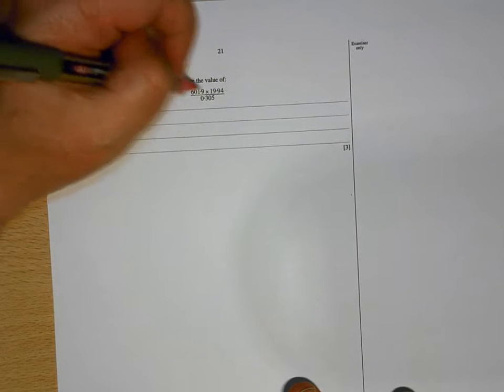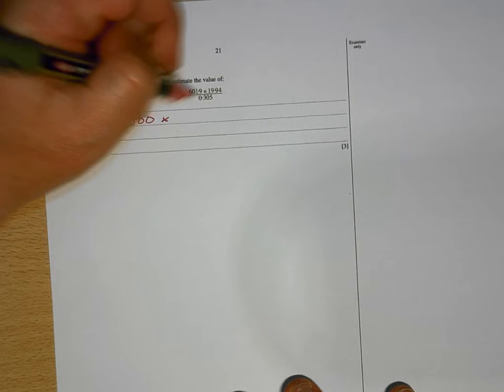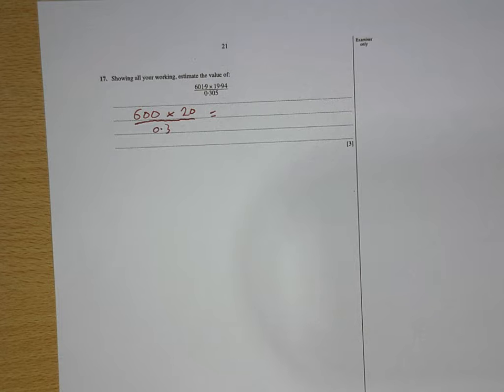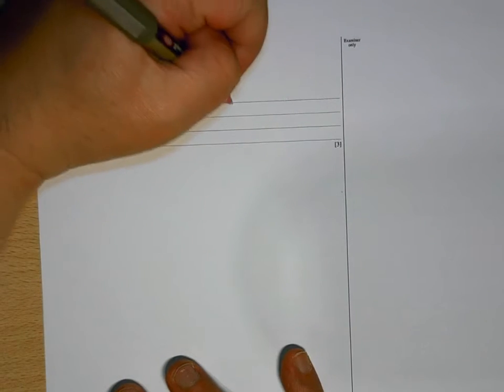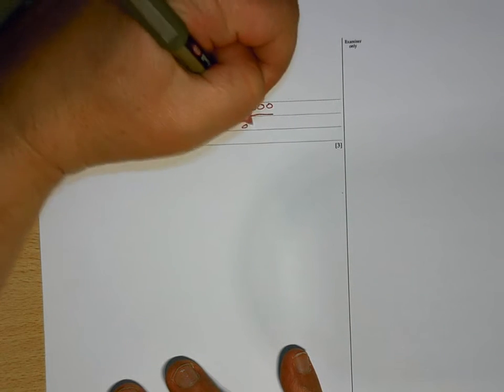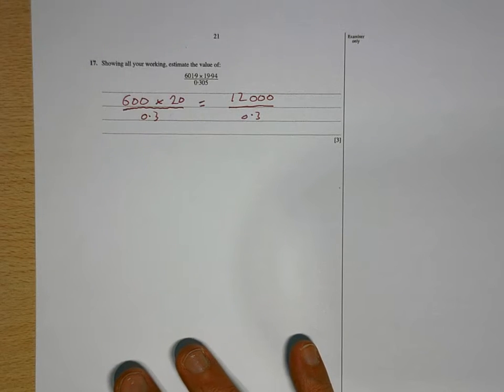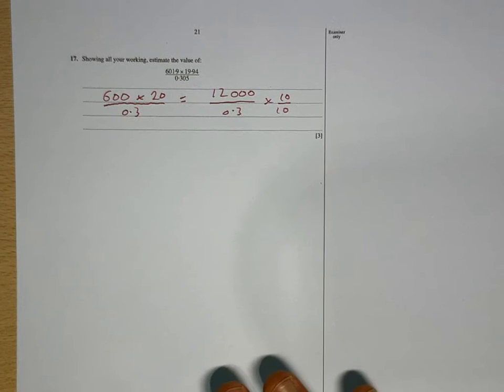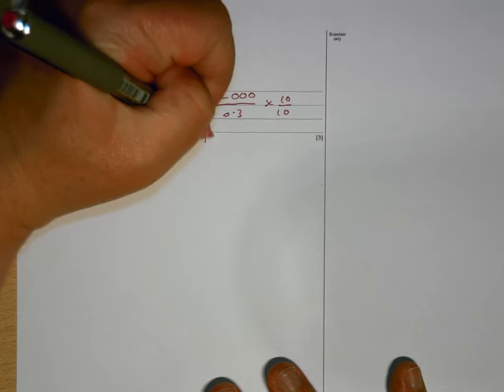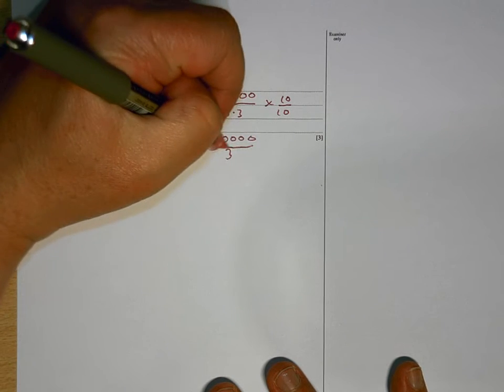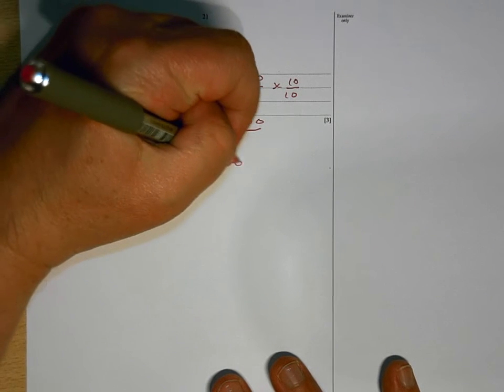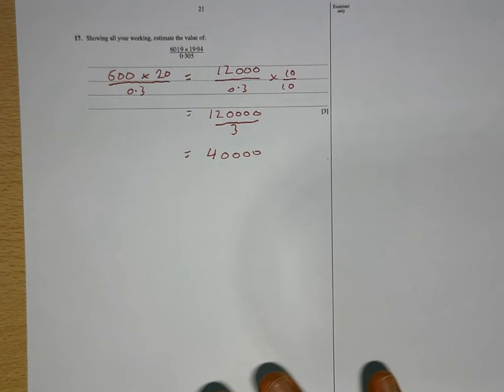And then the final question is an estimate. So, you round to numbers that make life easier. So, you're going to round that one to 600. You're going to round that one to 20. And you're going to round the bottom one to 0.3. 600 times 20 so 6 times 2 is 12 with 3 zeros divided by 0.3. Now, 0.3 is not a nice number but if you times it by 10 you get 3 which is easier. And so long as you times if you're going to times the bottom by 10 you times the top by 10 as well you're not changing the value of the sum. So, that means that's the same as that.